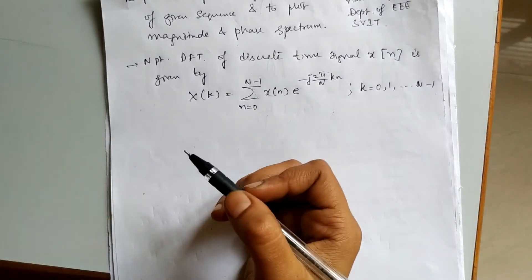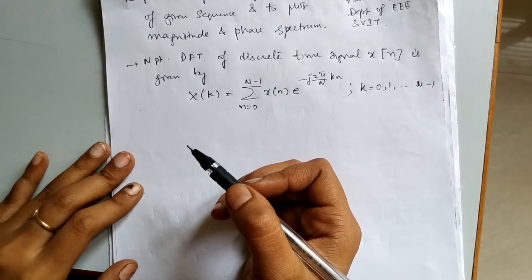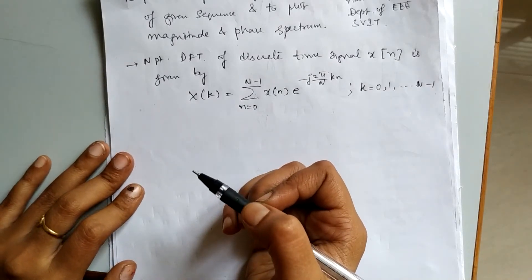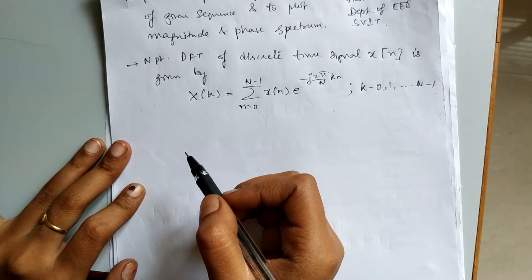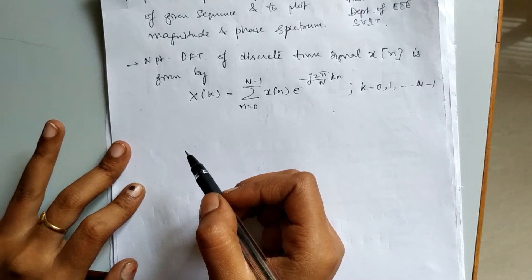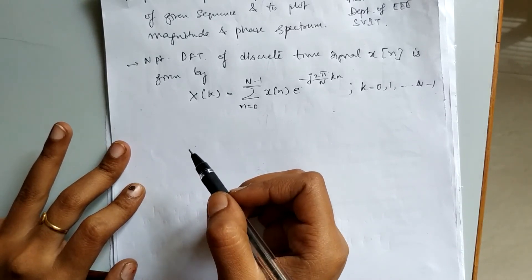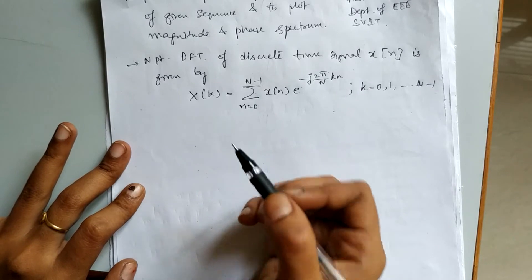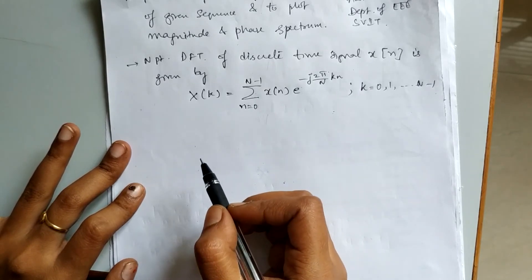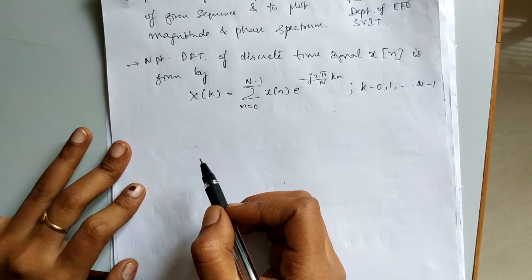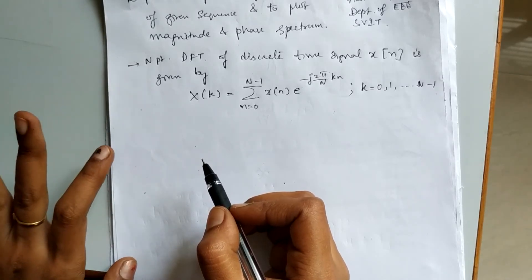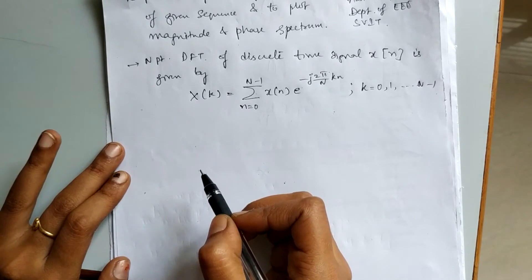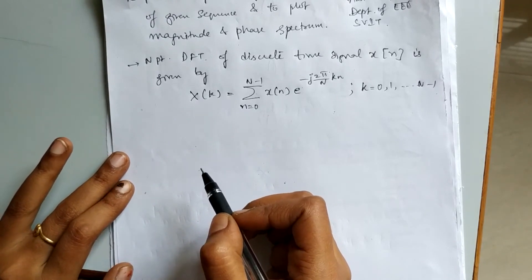The input will be the given sequence for which the DFT is to be computed. We also need to identify the length of the DFT required. We compute the DFT using a for loop, then plot the magnitude and phase spectrum.